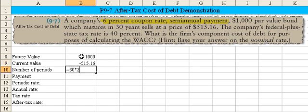The number of periods is 30 years times 2 since it is a semi-annual interest-bearing bond.